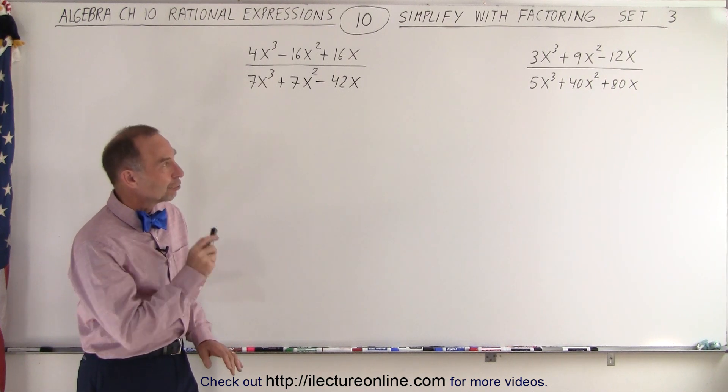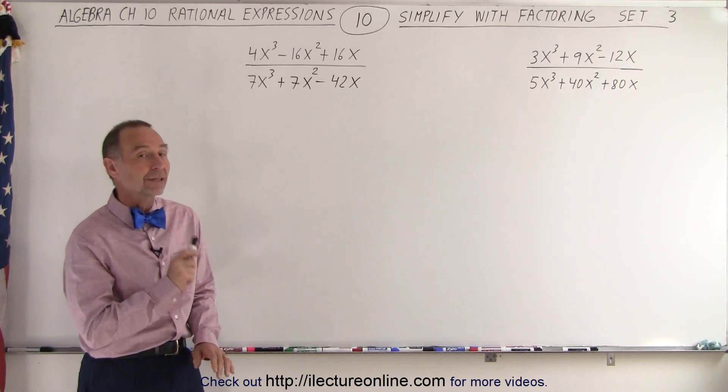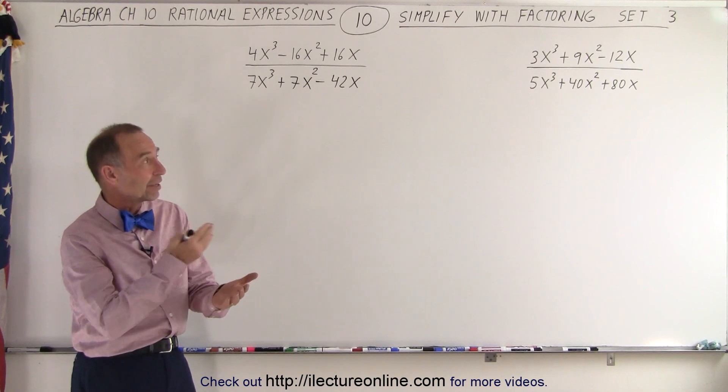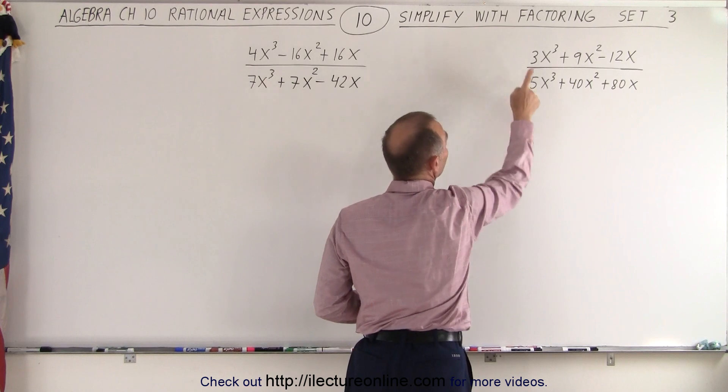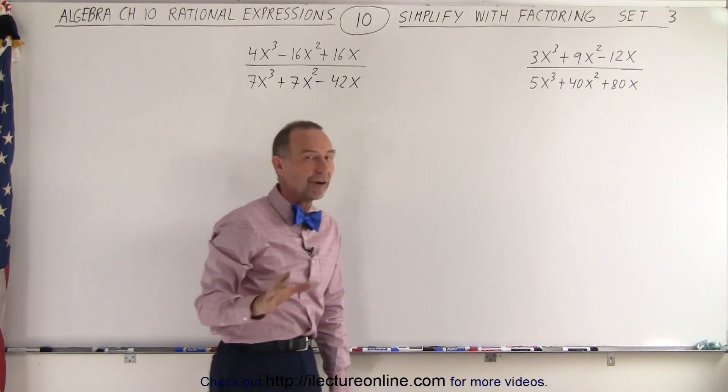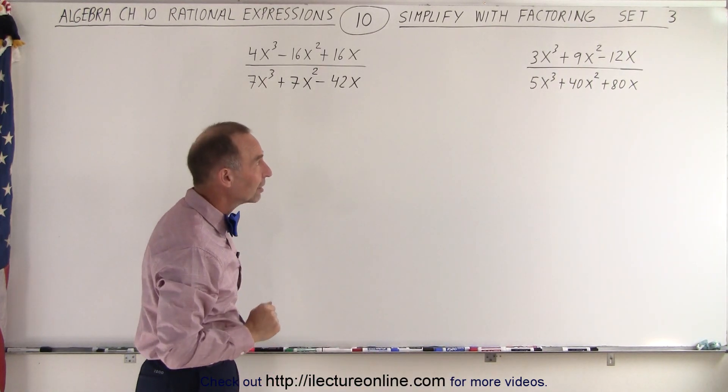But if we look carefully, every term in the numerator and the denominator contains an x, which means we can factor out an x. If we look at the numbers, notice that the numerator we can factor out a 3, and the denominator we can factor out a 5, so things may not be as bad as they initially seem.